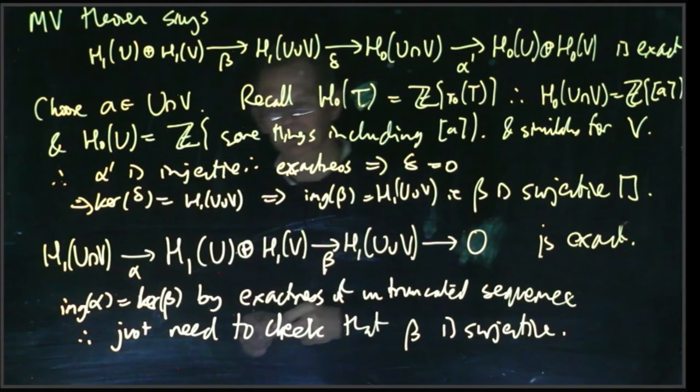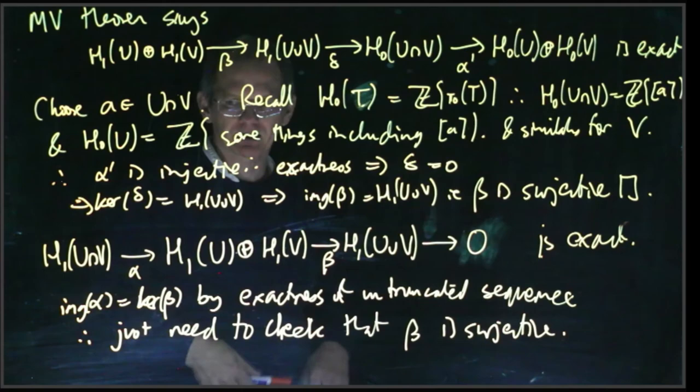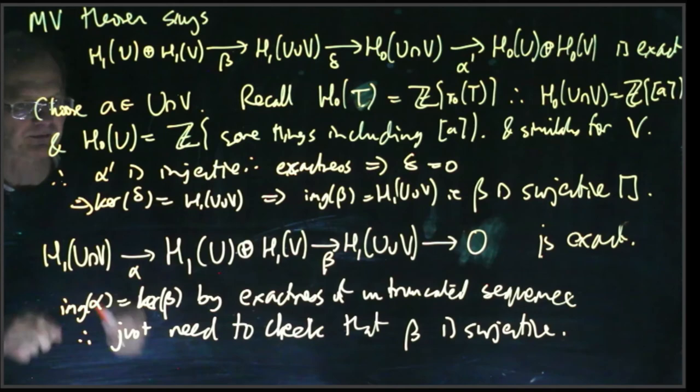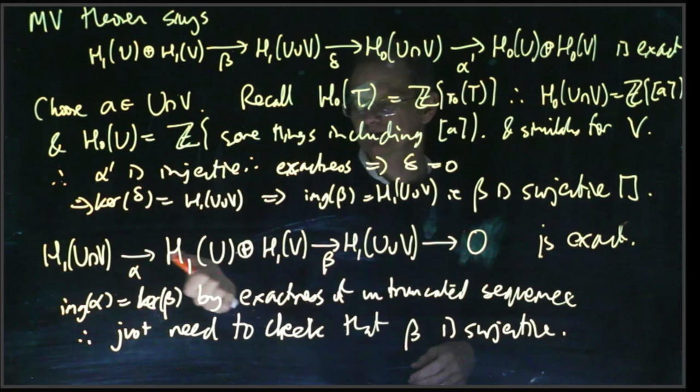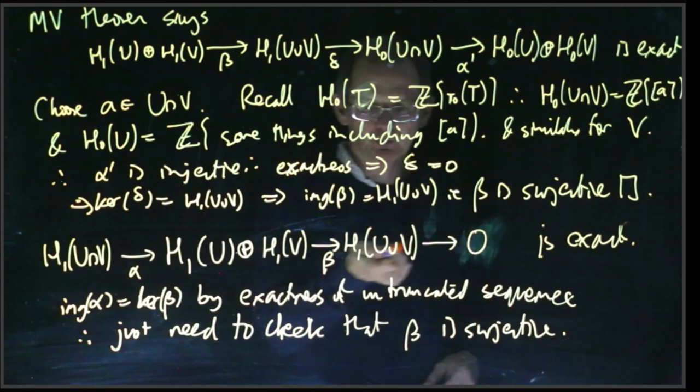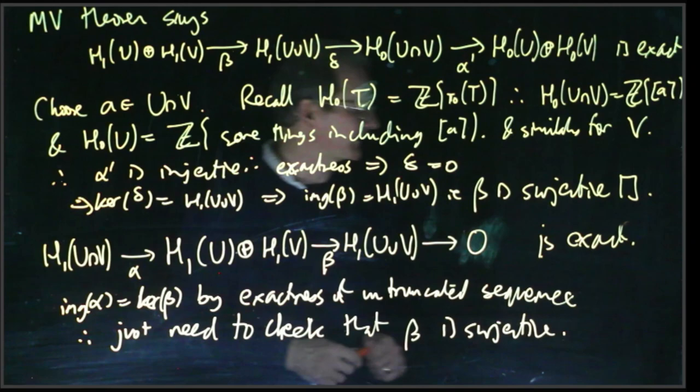So that proves that in the case where U intersect V is connected, then we can truncate the Mayer-Vietoris sequence, and it'll still be exact. Quite often it'll happen actually that U and V are also connected. If U and V are connected, then it's pretty easy to see that U union V is connected as well, because if U and V are both connected, then any point in U you can connect to A by a path in U, any point in V you can connect to A by a path in V, so any point in U union V or the whole space, you can connect to A by some path. So if U and V are both connected, then so is U union V in this case, and in that case all the H_0 groups will just be the integers. So that's a common case. That's what the Mayer-Vietoris theorem says, and in the next video we'll have some applications of it.